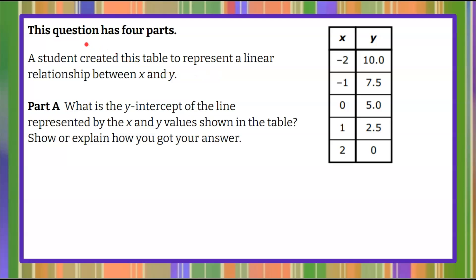We are told that this question has four parts, and we have a student who created this table to represent a linear relationship between x and y. Here's our table. Here's Part A: What is the y-intercept of the line represented by the x and y values shown in the table? We're asked to show or explain how we get our answer.